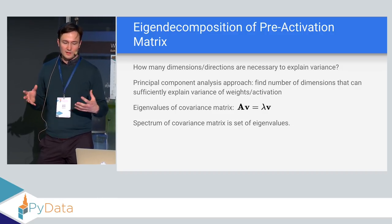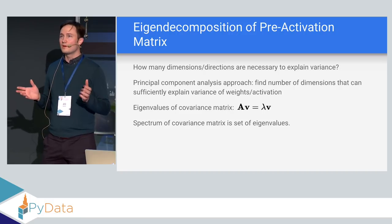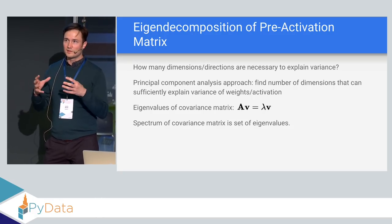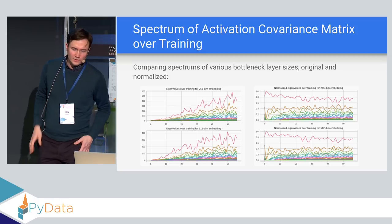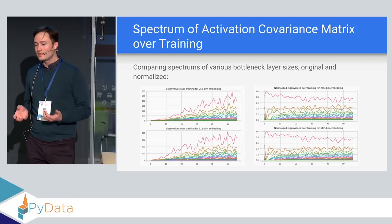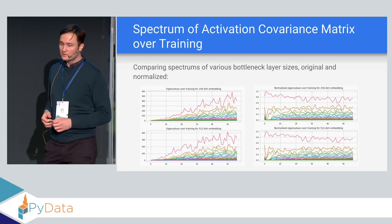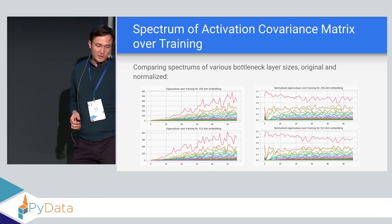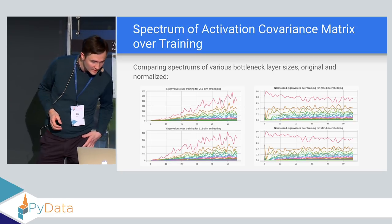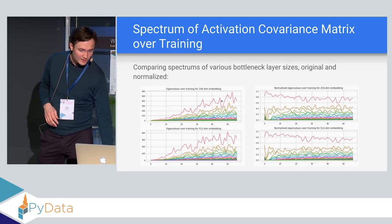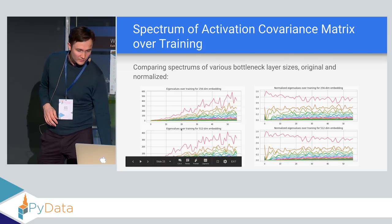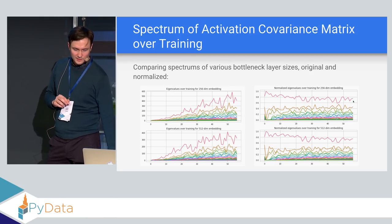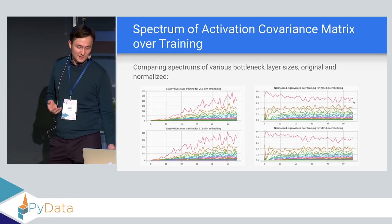The spectrum is just the set of eigenvalues — so if you have 10 dimensions, you'll have 10 eigenvalues and vectors. I wanted to visualize the changes in directions of activation over training and see how that changes, so I started plotting the top eigenvalues for models with different-sized bottlenecks and how that changes over training. By itself that didn't give me much insight, but it made pretty graphs.